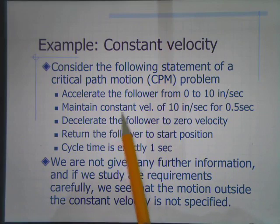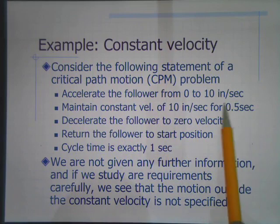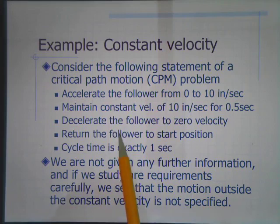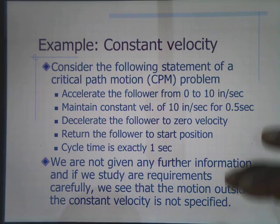Moreover, only the constant velocity portion is specified in terms of the amount of time we're going to be doing that. All the others are left up to us. So let's see how we can reduce this from four polynomials to a smaller number of polynomials.